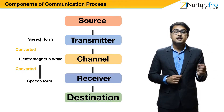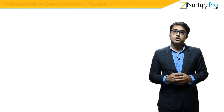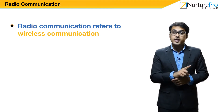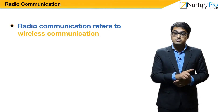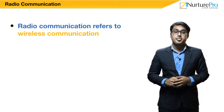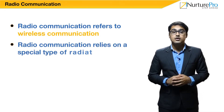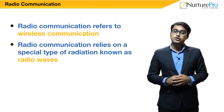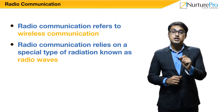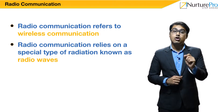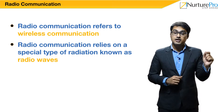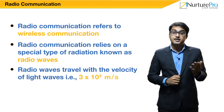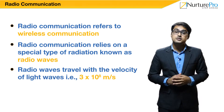Destination: Finally, the message reaches the end user. Radio communication refers to wireless communication wherein wires are not used between the transmitter and the receiver to send or receive signals. Radio communication relies on a special type of radiation known as radio waves. Radio waves are electromagnetic waves — a form of energy obtained from a combination of electrical and magnetic effects of electric currents. Radio waves travel with the velocity of light, which is 3 × 10⁸ meters per second.